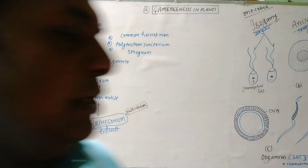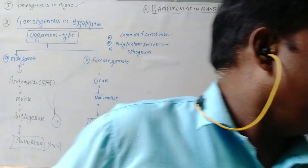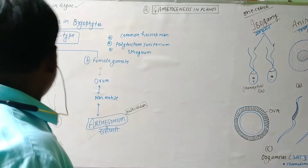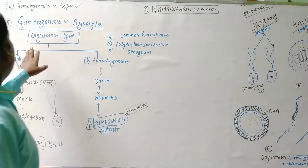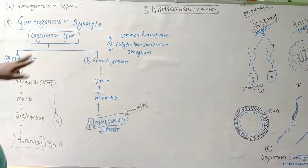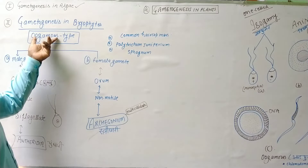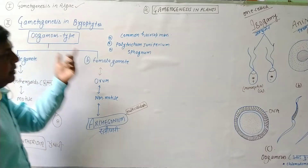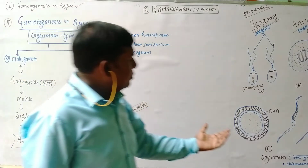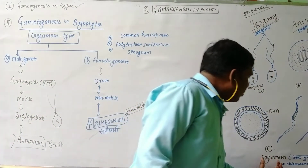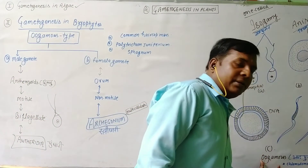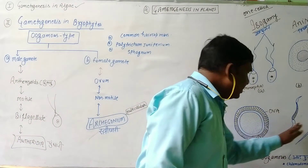You have just seen that there are two types. The gametogenesis in Bryophytes is oogamy. I have just told you about oogamy types, and here you can watch.